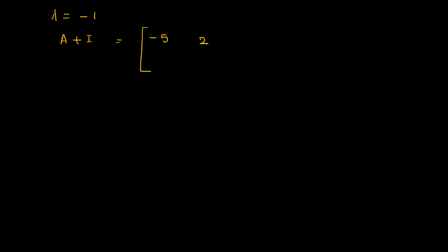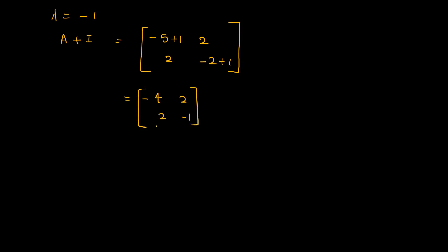Substituting the A matrix, that is [-5, 2; 2, -2], and adding I gives the matrix [-4, 2; 2, -1]. Applying row operation R2 gives 2R2 plus R1: that is [-4, 2] and then 2 into 2 gives 4 minus 4.